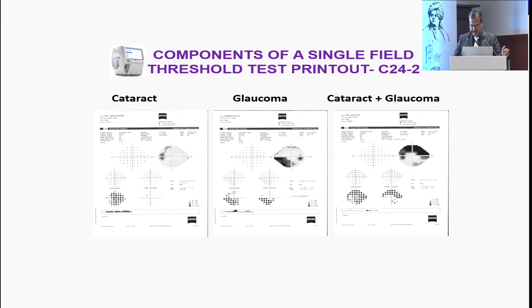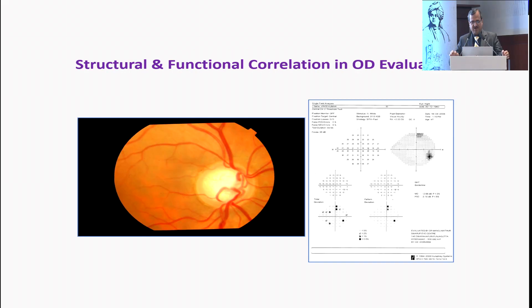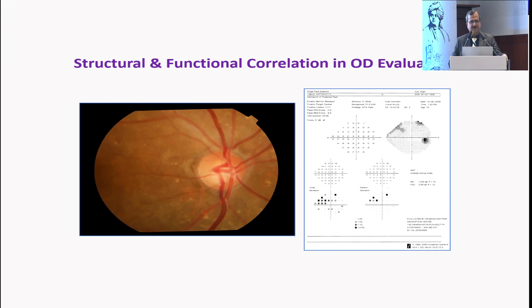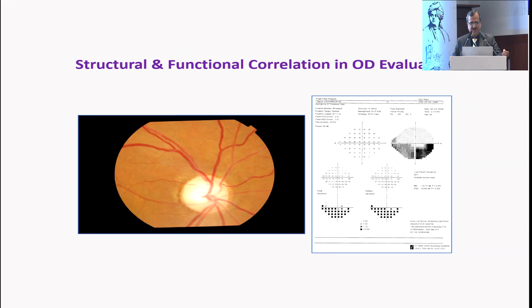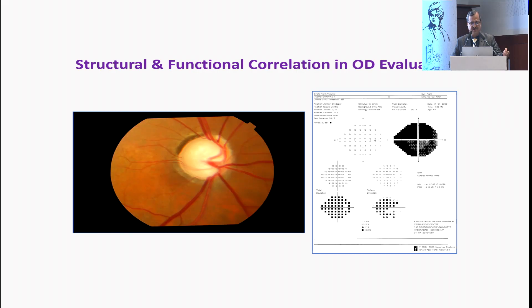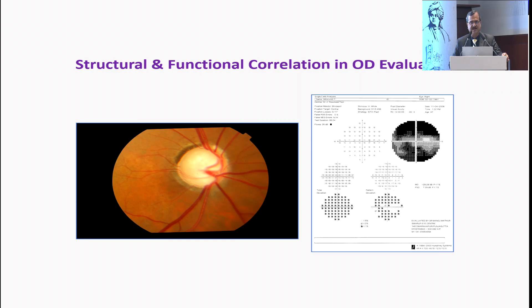Probably cataract and glaucoma can coexist. Moving on to structural and functional correlation: here you see a large disc with a 0.75 cup and a normal visual field. Here, an inferior temporal notch forms an early defect shown as a superior nasal step. Here you see excavation of the superior rim, which translates into an inferior arcuate defect. Concentrate not on color cupping but on the dipping of the vessels. This near-total cup results in a field like this, and if you detect such a situation, always correlate with a 10-2 for follow-up.